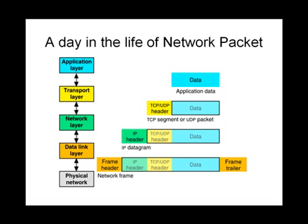Before moving on to what raw sockets are and what their functionality is, let's have a look at how a network packet traverses through the network stack. Assuming this is an ethernet network, as we can see to the left, this is the whole OSI layer: the physical network, the data link layer, the network layer, transport, and the application layer. The physical network is where our ethernet card is, and once a packet comes in, it arrives complete with all headers. The frame header would be the ethernet header for ethernet-based networks, followed by the IP header, the TCP/UDP header, and finally the data and the frame trailer.